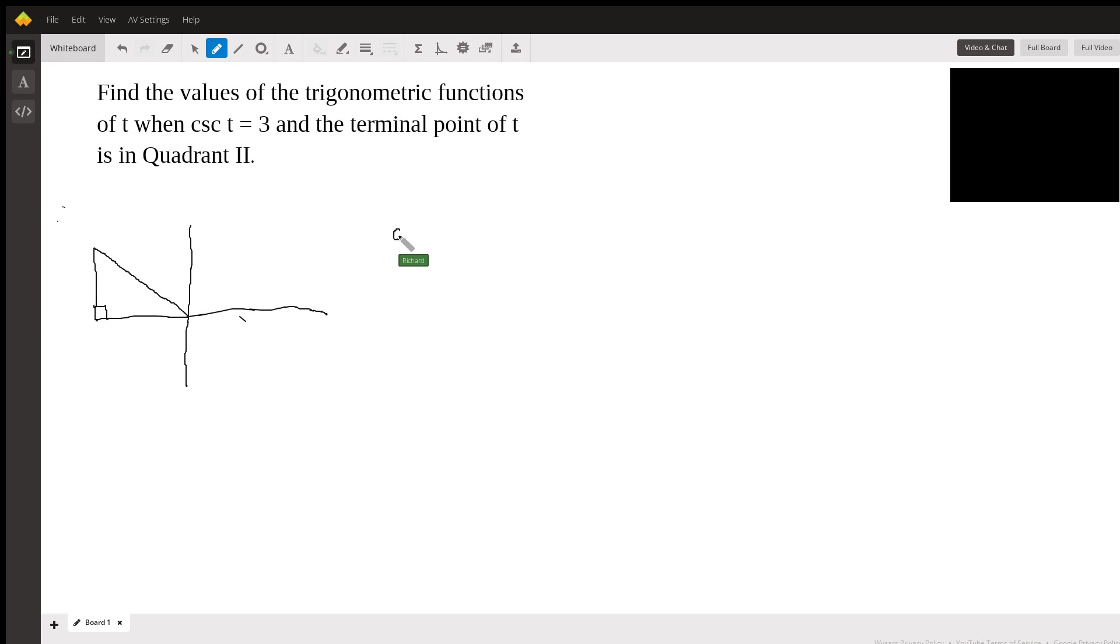We're told that the cosecant t is three. Well, the cosecant is just one over sine. So if three is one over the sine of t, then you can see that just cross multiply here, and you're going to get the sine of t is equal to one third.